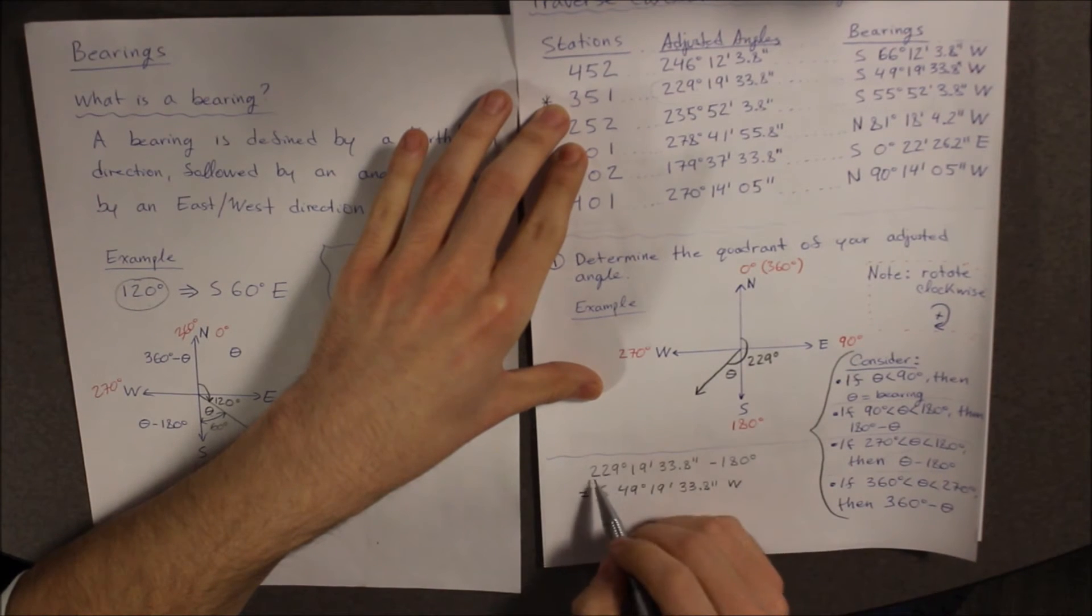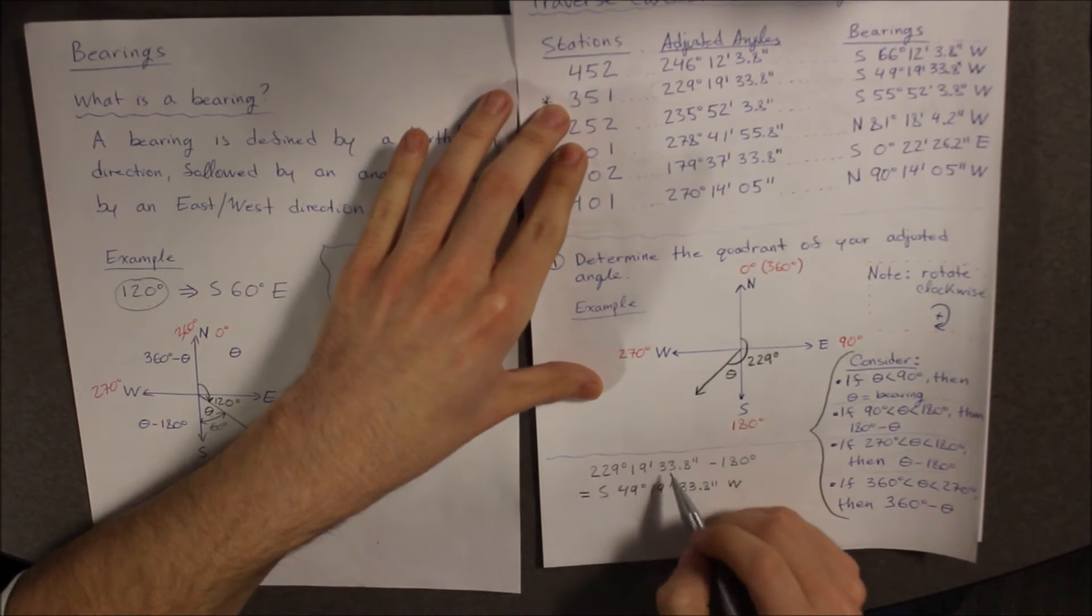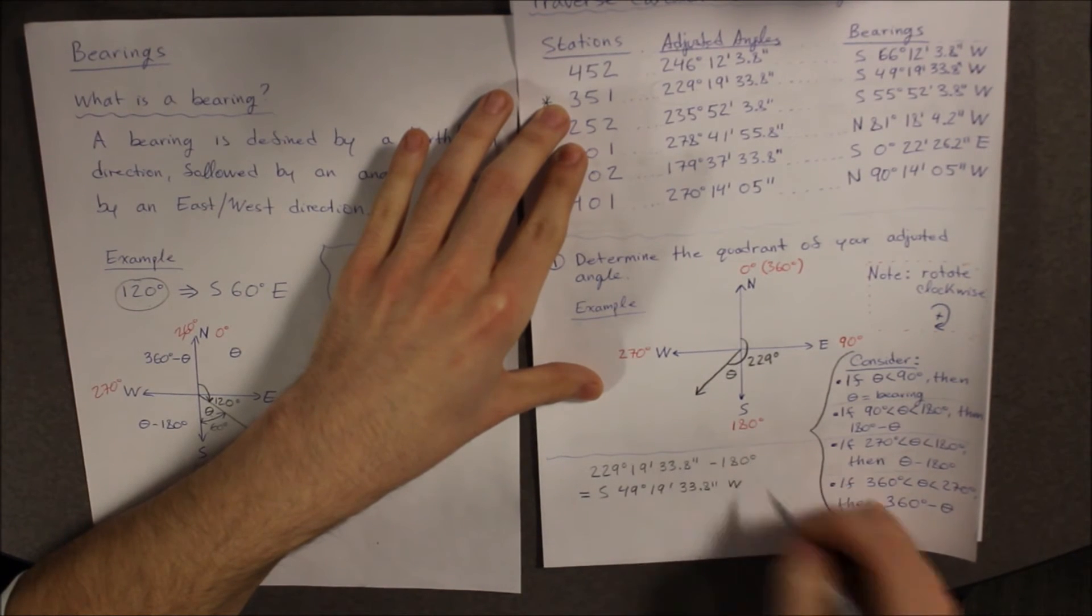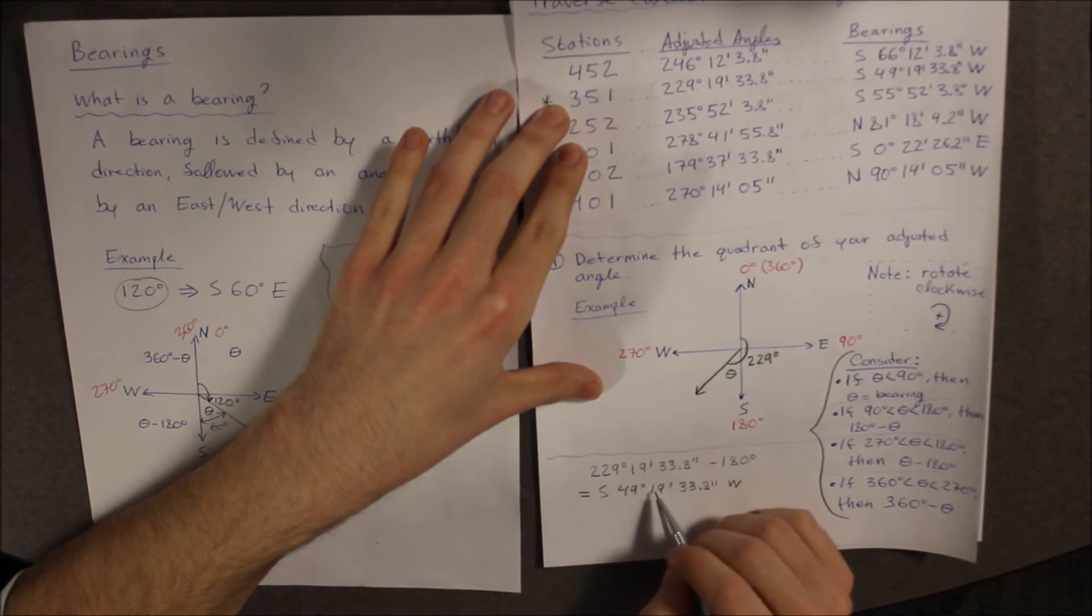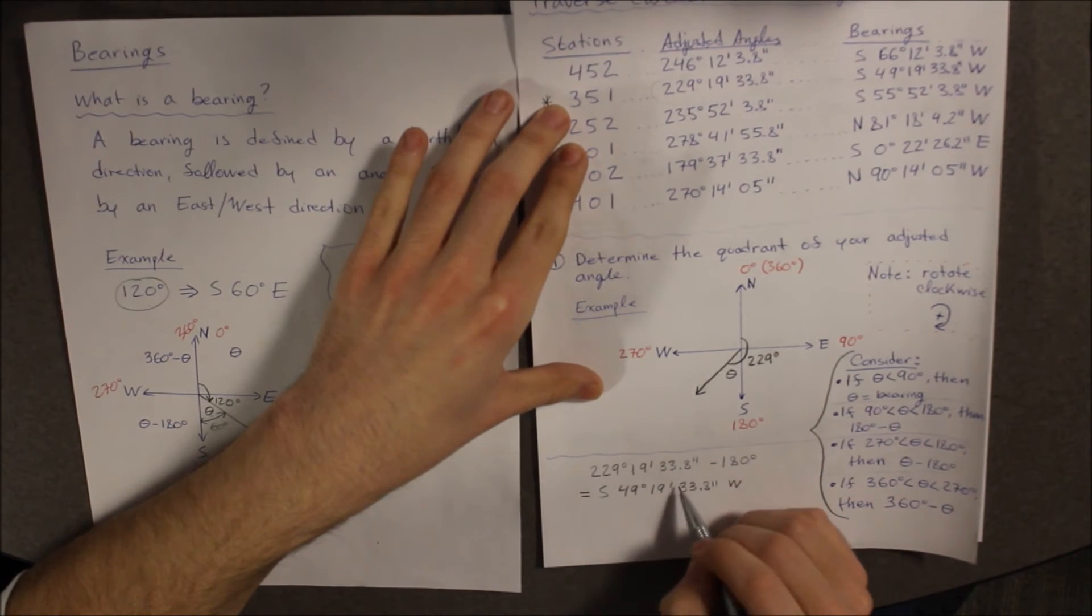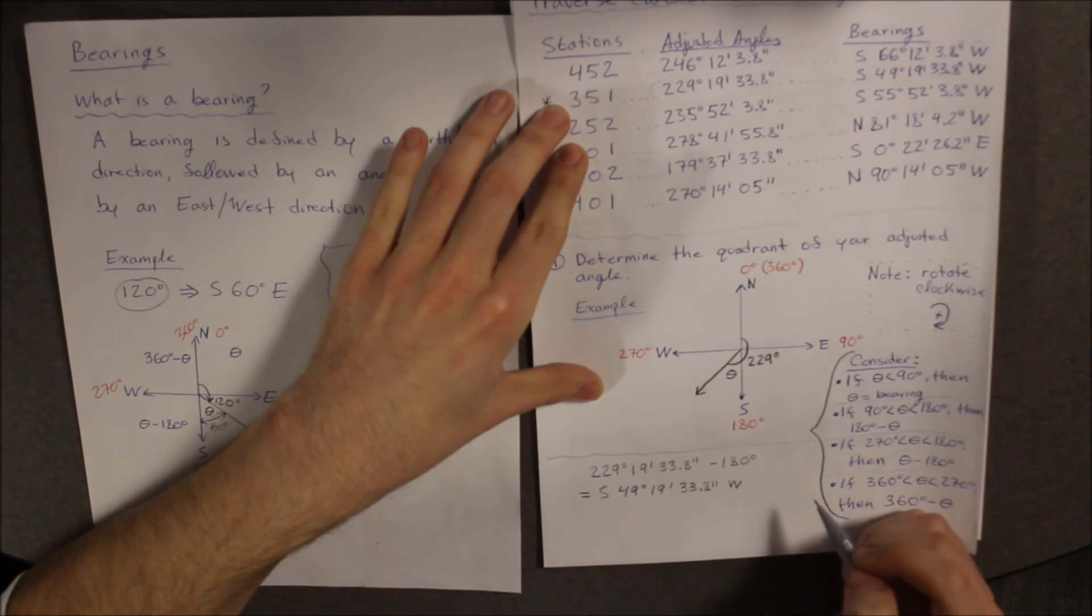So our angle is 229 degrees, 19 minutes, 33.8 seconds. And we are subtracting 180 degrees. Now, that gives us 49 degrees, 19 minutes and 33.8 seconds.